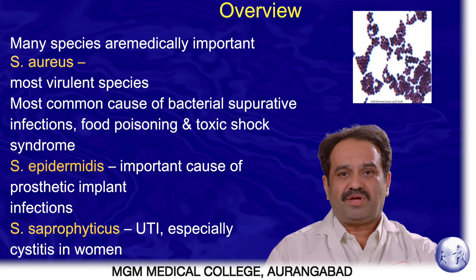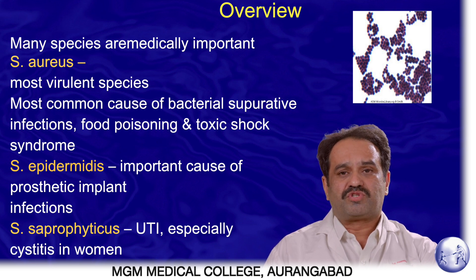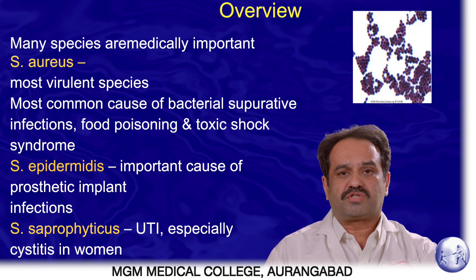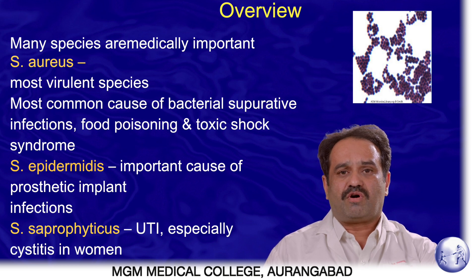The overview about Staphylococci. There are a number of species of Staphylococci that infect man. The most important species is Staphylococcus aureus — the most virulent. It causes a number of suppurative infections, food poisoning, and toxic shock syndrome. Staphylococcus epidermidis causes infection of prosthetic implants. Staphylococcus saprophyticus is a cause of urinary tract infections, especially cystitis in women.